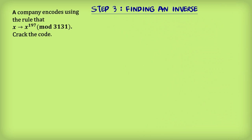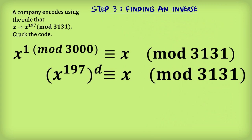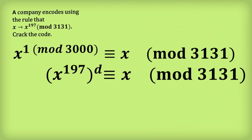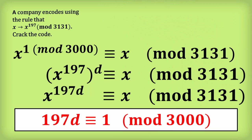Step 3: finding an inverse. We have the number x to the 197, and to decode it we're going to raise it to some power d, and that will get us back to x. So x to the 197, all to the power of d, is equivalent to x. Using the exponent rule, x to the 197 times d is equivalent to x. Comparing the equations, we conclude — highlighted in red — that 197d must be equivalent to 1 mod 3000. That's how we work out the decoding number.